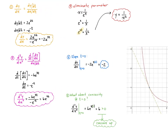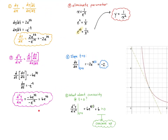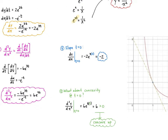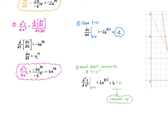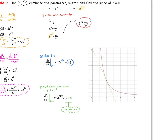Let's also check concavity at t = 0. We use the second derivative, 6e^(4t). Plugging in t = 0 gives 6, which is positive. Since the second derivative is positive at t = 0, the curve is concave up. If we sketch this using a table of values, we get the curve shown, with slope −2 passing through the point (1, 1), and we can confirm it is concave up at that point.